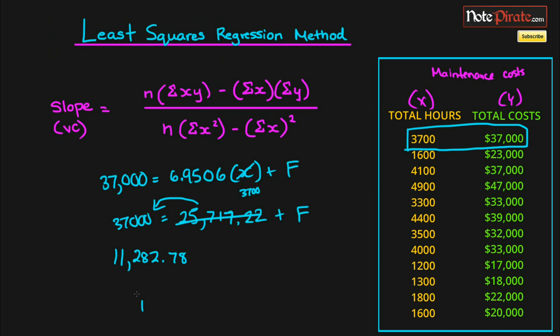So our cost function will be Y equals 6.9506X plus 11,282.78. Our fixed cost is this portion, and our variable cost is right here. We'll have an initial fixed cost of $11,282, and then each additional hour will cost $6.95 approximately.